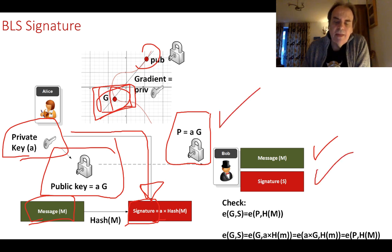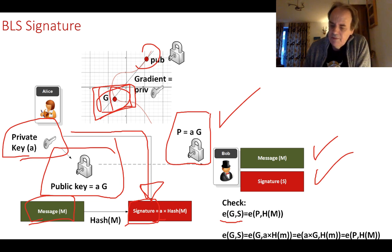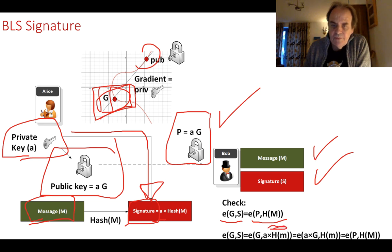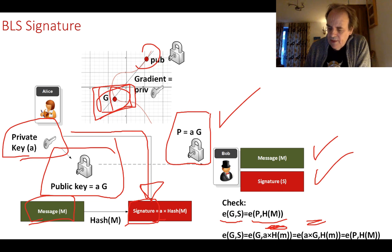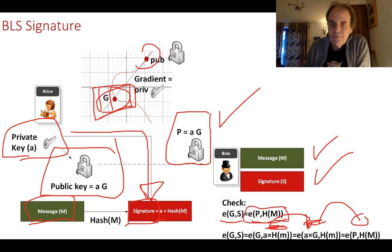We end up with a message, a signature, and a public key. The signature is then checked: we take E(G, S) — where G is the generator point and S is the signature — and verify it equals E(P, hash(message)), where P is the public key. This works because S equals A times hash(message), and expanding the other side gives A times G for the public key, yielding the same result. This way we can create very simple and short signatures.